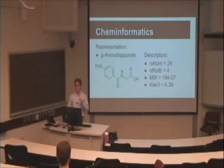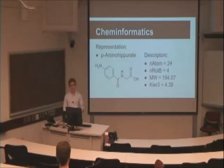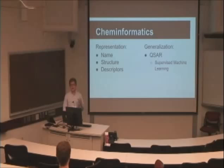What we generally use are calculated descriptors, generated from the structure to capture the salient aspects of the compound. Descriptor sets range from simple ones — like number of atoms, number of rotatable bonds, and molecular weight — to more esoteric measures like the Kier 3 shape index, which measures the branching factors of a compound. The other half is generalization: applying what we've learned from compounds with known activities to predict how new compounds will interact with transporters.